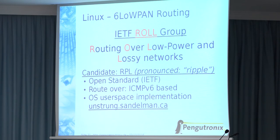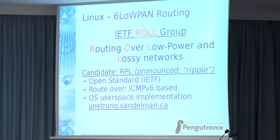One slide about 6LoWPAN and routing. There exists at the IETF the ROLL working group, which stands for Routing Over Low power and Lossy networks — and low power and lossy networks are 6LoWPAN networks. There is one candidate called RPL (pronounced 'ripple'). It is an open standard by IETF, ICMPv6-based, and there exists an open source user space implementation. This is a big to-do at the moment as it hasn't been tested yet.